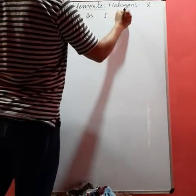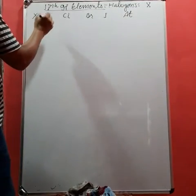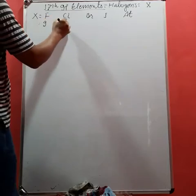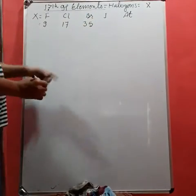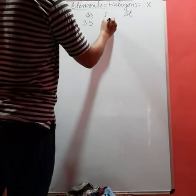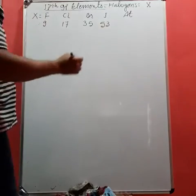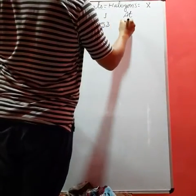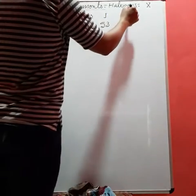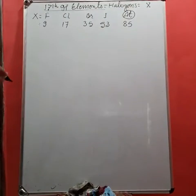You can write bromine, iodine, and astatine. The atomic number of chlorine is 17, bromine is 35, add 18 more gives 53 for iodine, and add 32 more gives 85 for astatine.